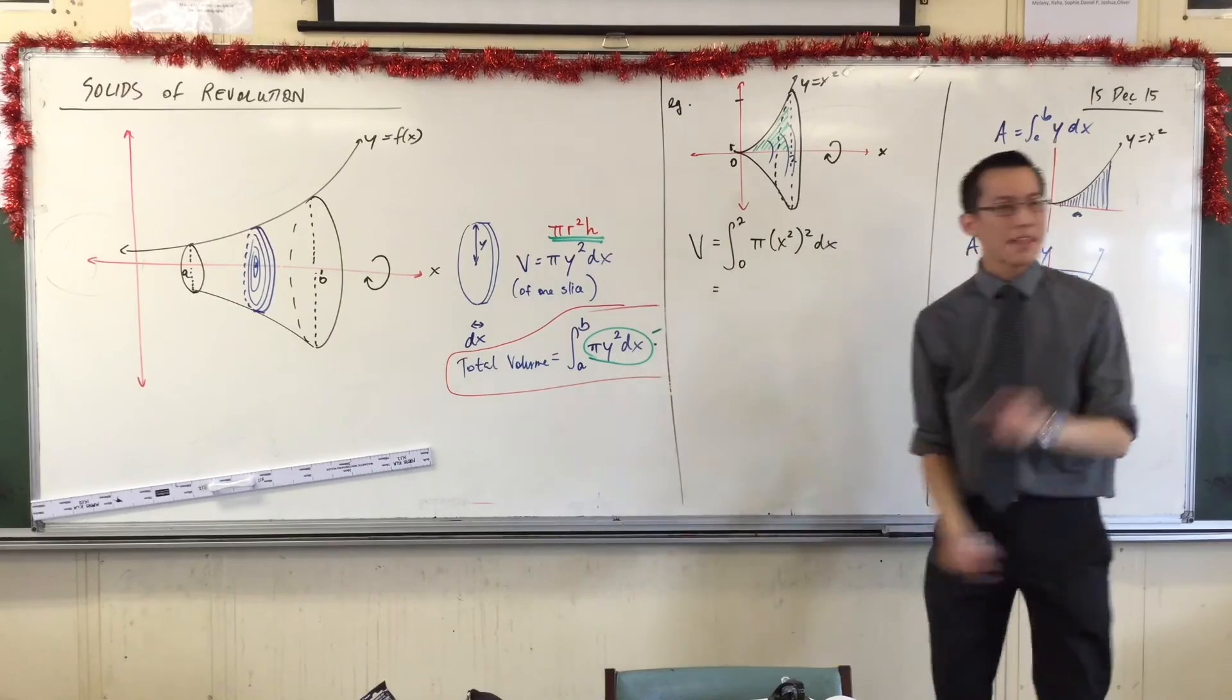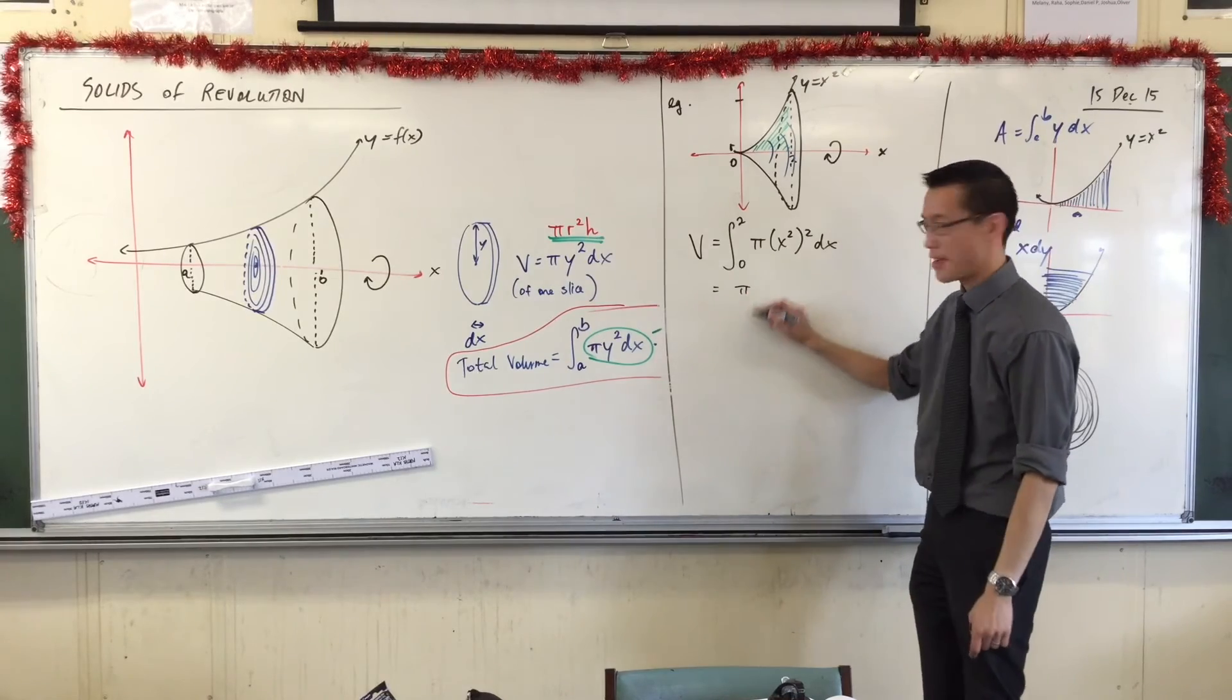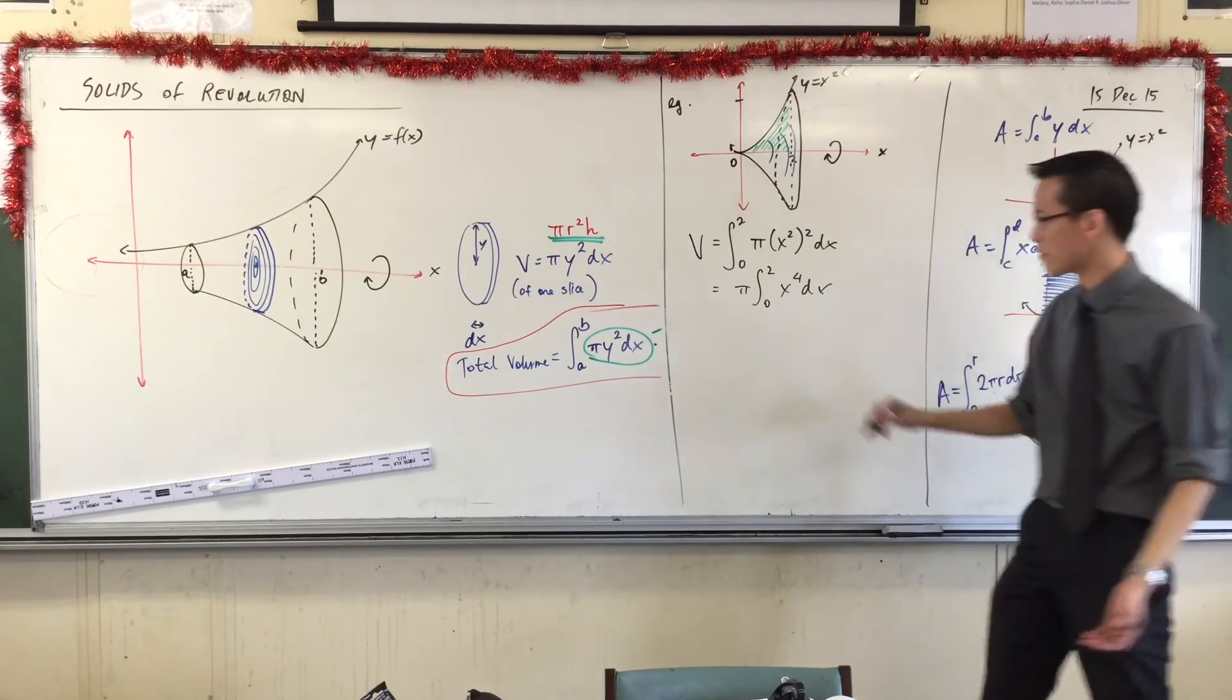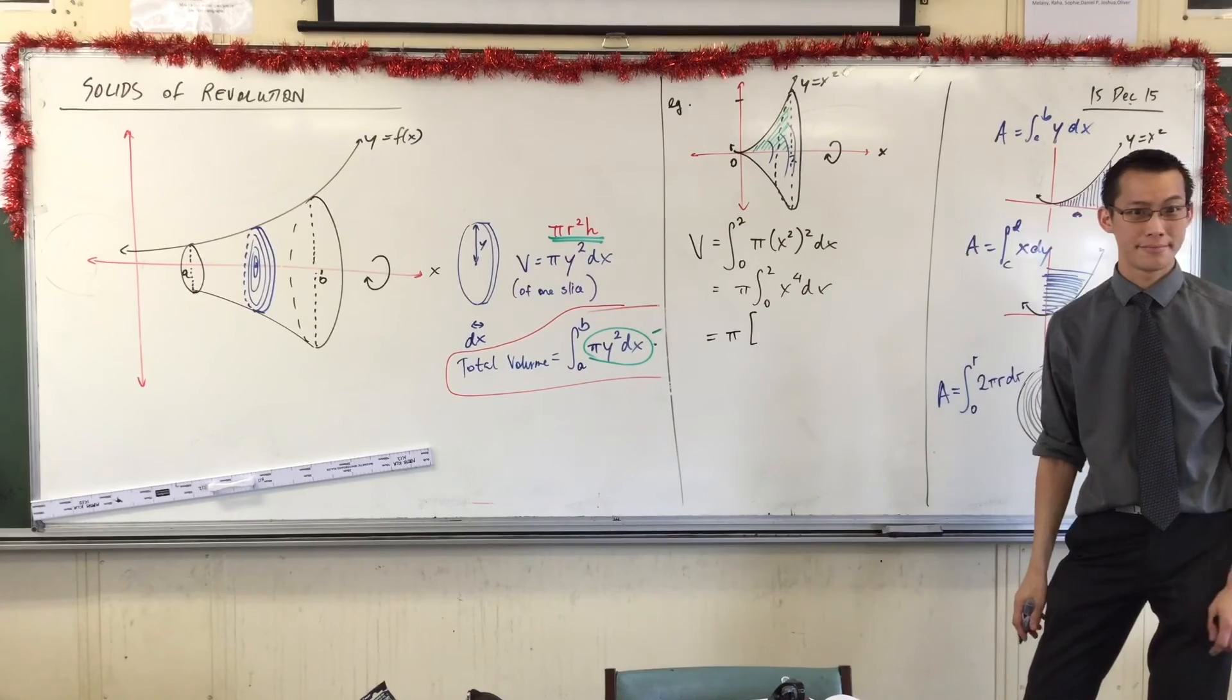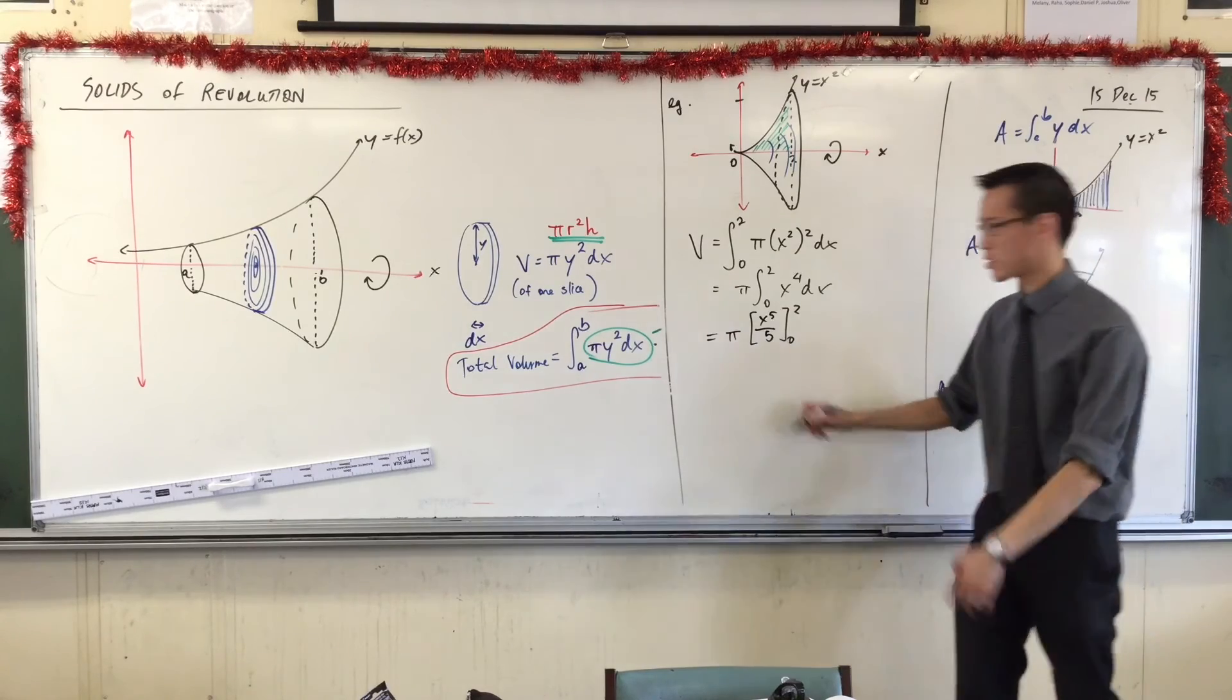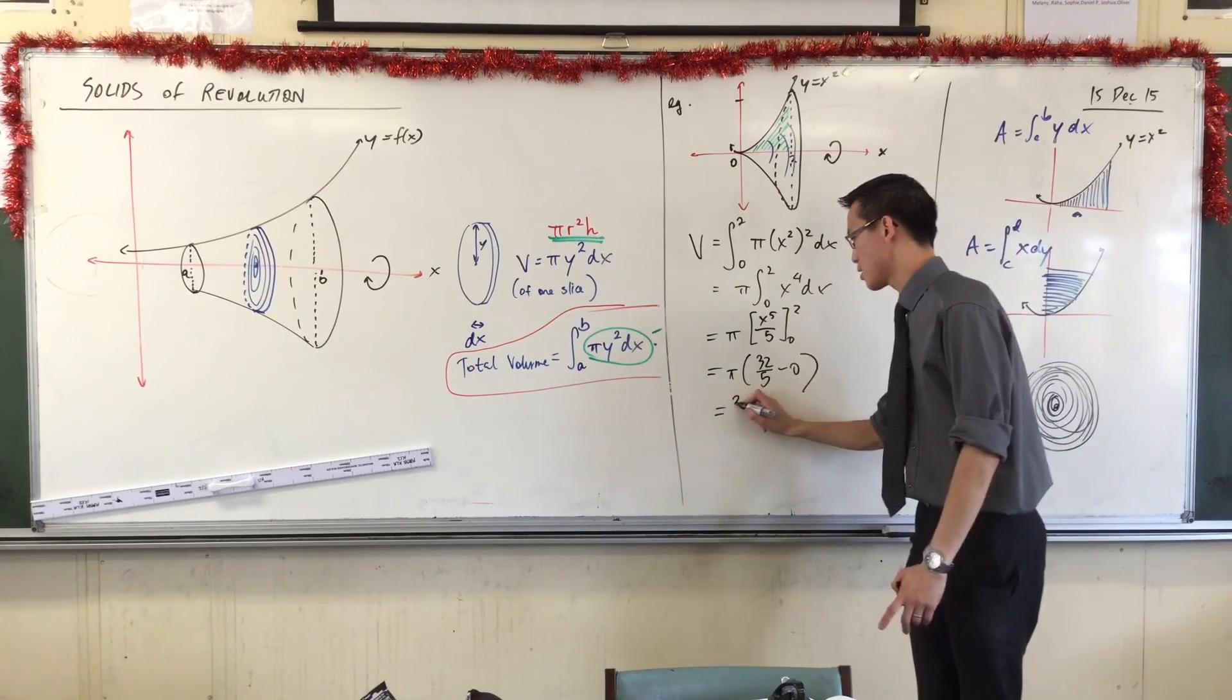Alright, so that's that. This is the point where, having written down the pi, now I know it's there, now I take it out the front. So, I'm going to stick that pi there. From 0 to 2 of x to the 4. And then, this is just an integral. It's just an integral, right? So, what's my primitive? x to the 5 on 5. I'm going to evaluate it from 0 to 2. You can probably see what's going on here, right? So, this is 32 on 5 take 0. And there's my number.